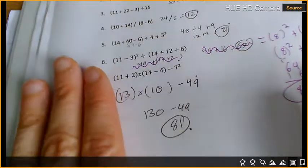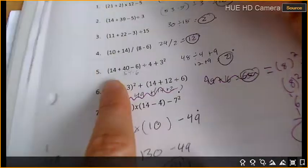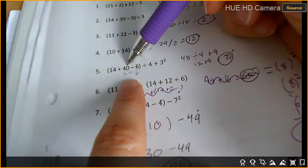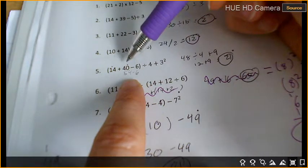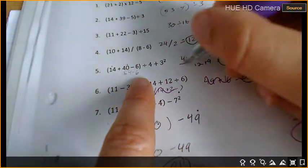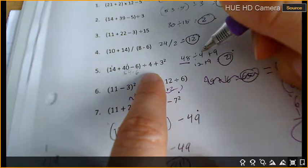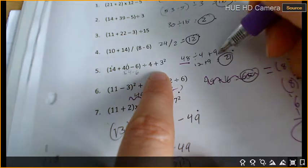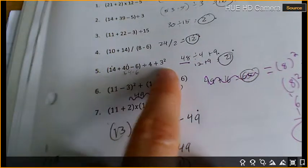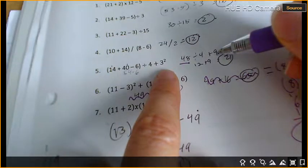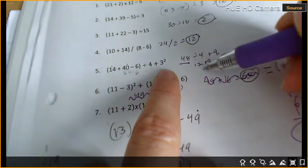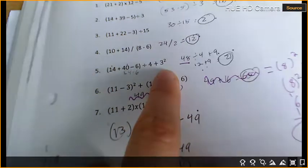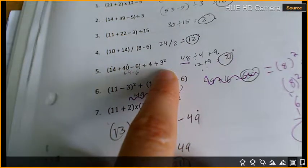All right, number 5? We've got 14 plus 40 is 54. 54 minus 6 is 48. Divided by 4 plus 3 times 3 is 9. So, I did parentheses, got 48, did my exponent, got 9. 48 divided by 4 is 12. 12 plus 9 is 21. Yes.